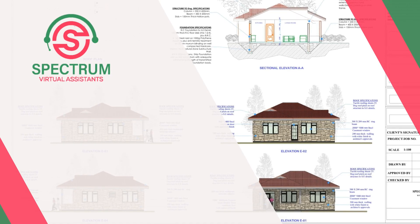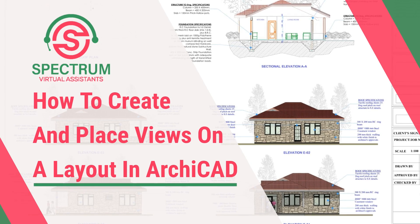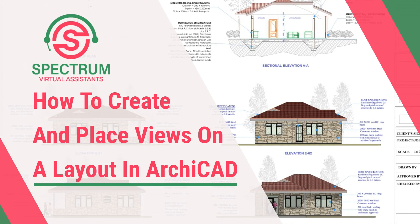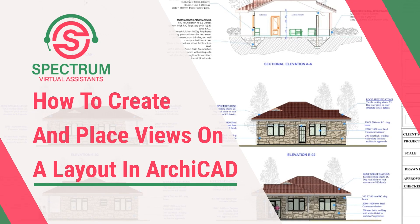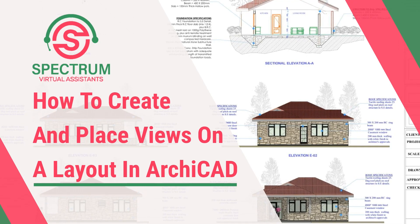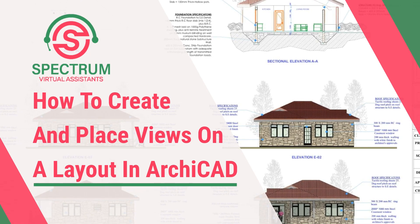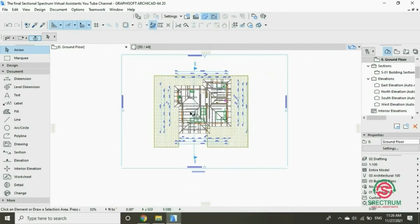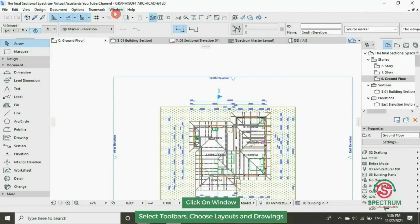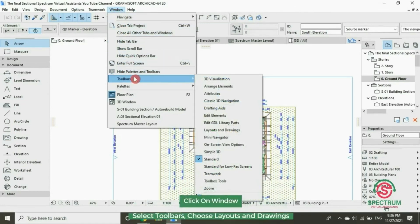Hi, this is lesson 15 of 16, and today I'm going to show you how to create and place views on a layout in ArchiCAD. At the top, click on Window, drop down to Toolbars, and select Layouts and Drawings.